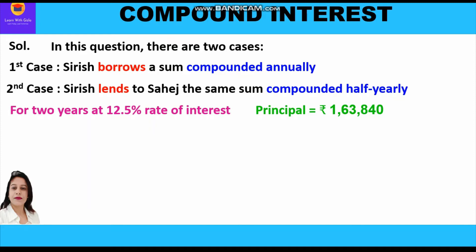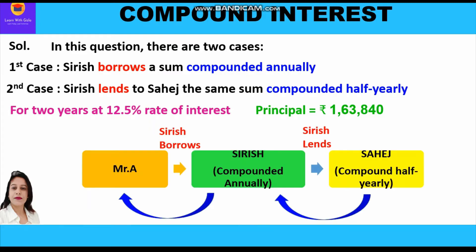The time period is two years and the rate of interest is 12.5 percent. The principal is the same in both cases, that is rupees 1,63,840. Sirish borrows from say Mr. A at interest compounded annually, and he further lends to Sahaj at interest compounded half-yearly. The principal, rate of interest, and time period are all the same — the only difference is the compounding frequency.